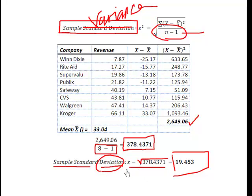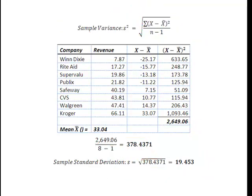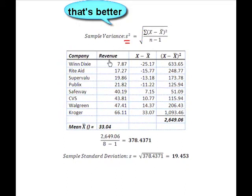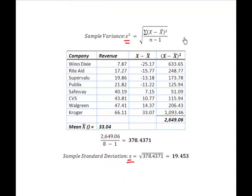The standard deviation is simply the square root of the variance. Remember: S squared is the variance of the sample, S is the standard deviation of the sample, sigma squared is the variance of the population, and sigma is the standard deviation of the population. So now that we know variance and standard deviation, what do we do with them and how do we apply them? That's where the empirical rule shows up.